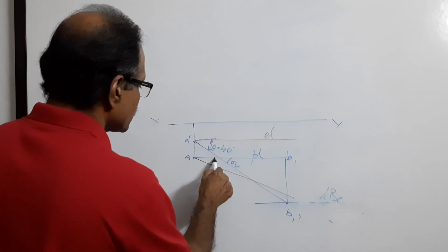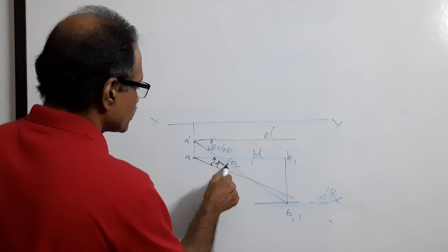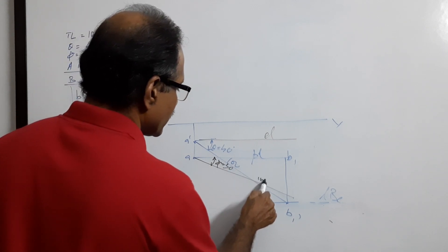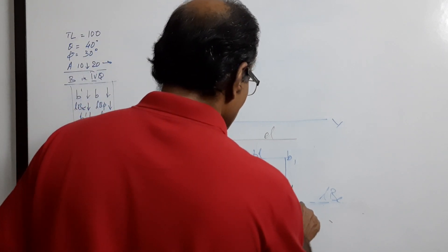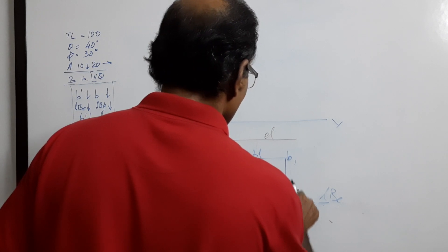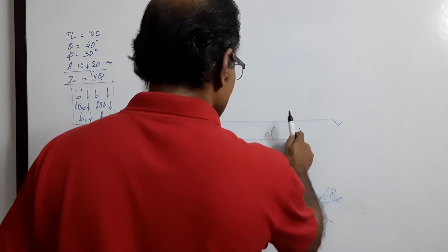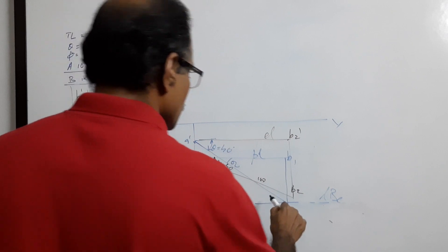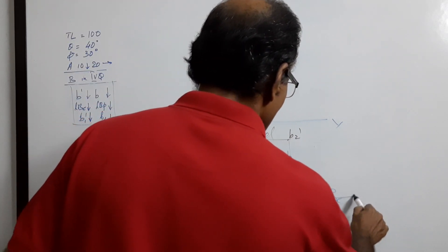This angle is phi equals 30, 100, B2, B2 dash, L B.